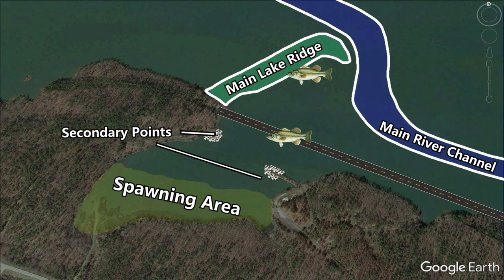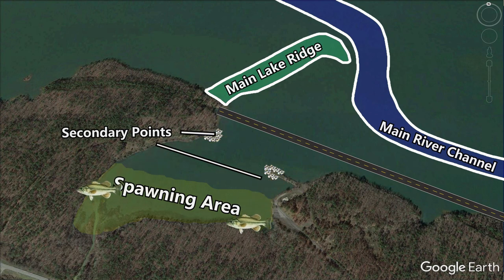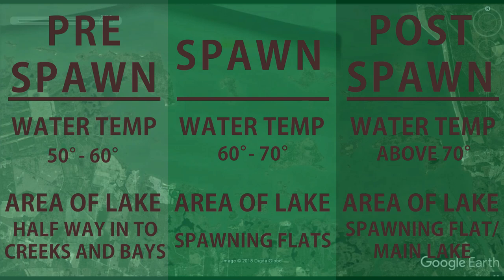If you saw my last video on the pre-spawn, you'll remember how bass migrate from their main lake winter areas to their spring spawning areas. For a quick recap, bass normally move from their main lake areas to staging areas like secondary points and ditches in the mouths of pockets, then move up to their spawning areas once water temperatures hit 60 degrees. These are guidelines, not hard rules — I've seen fish spawn in 55 degree water and 75 degree water, and out on the main lake too, but they'll cover about 80% of cases.